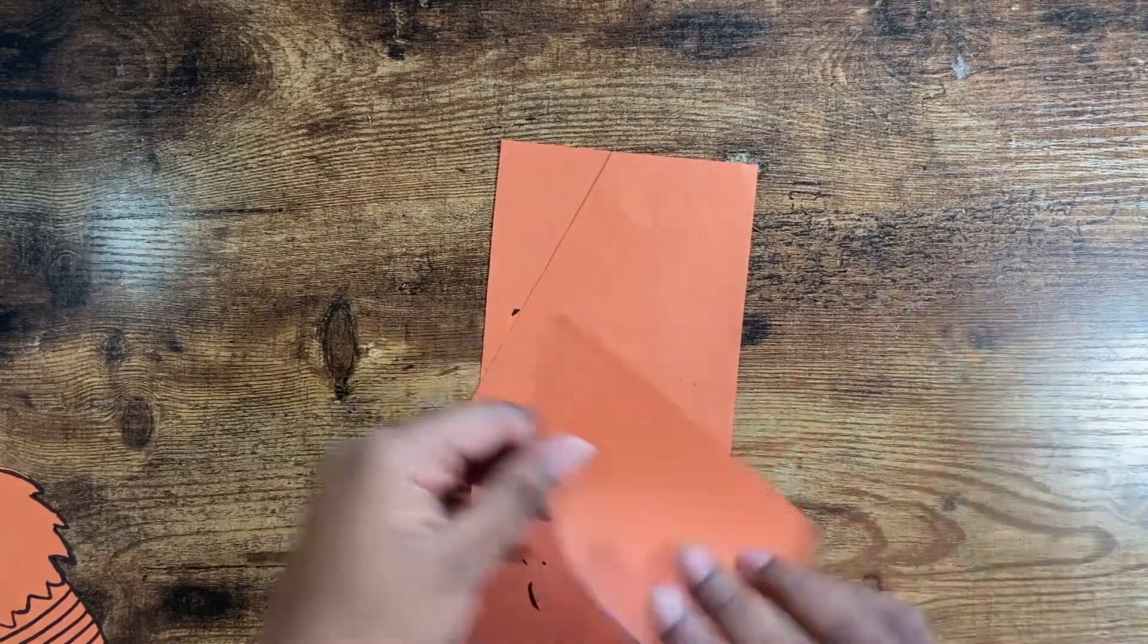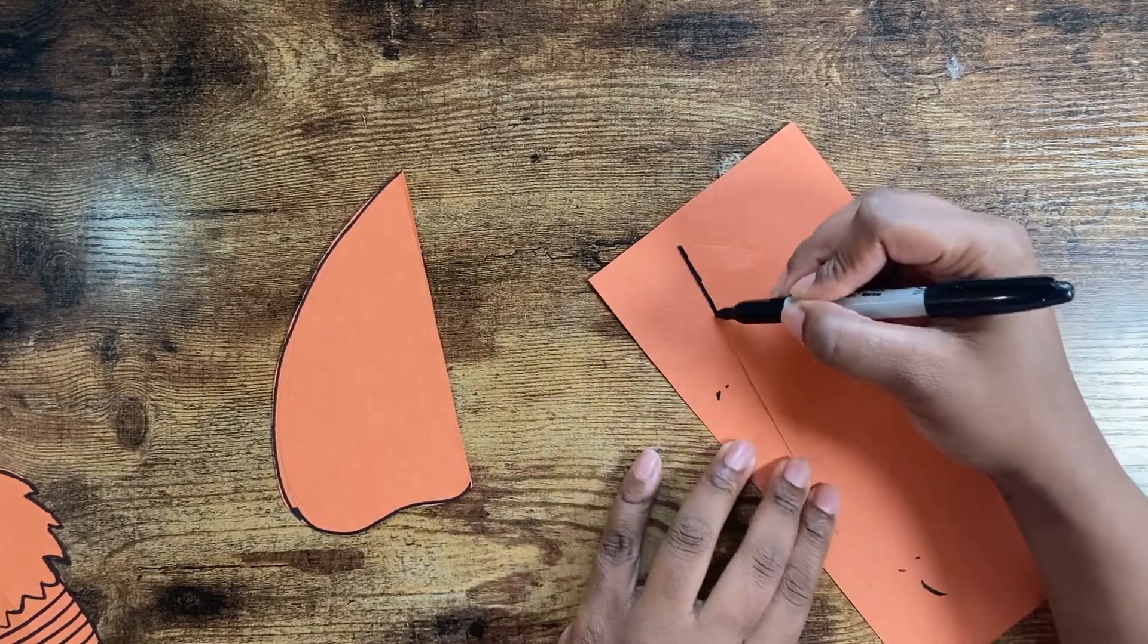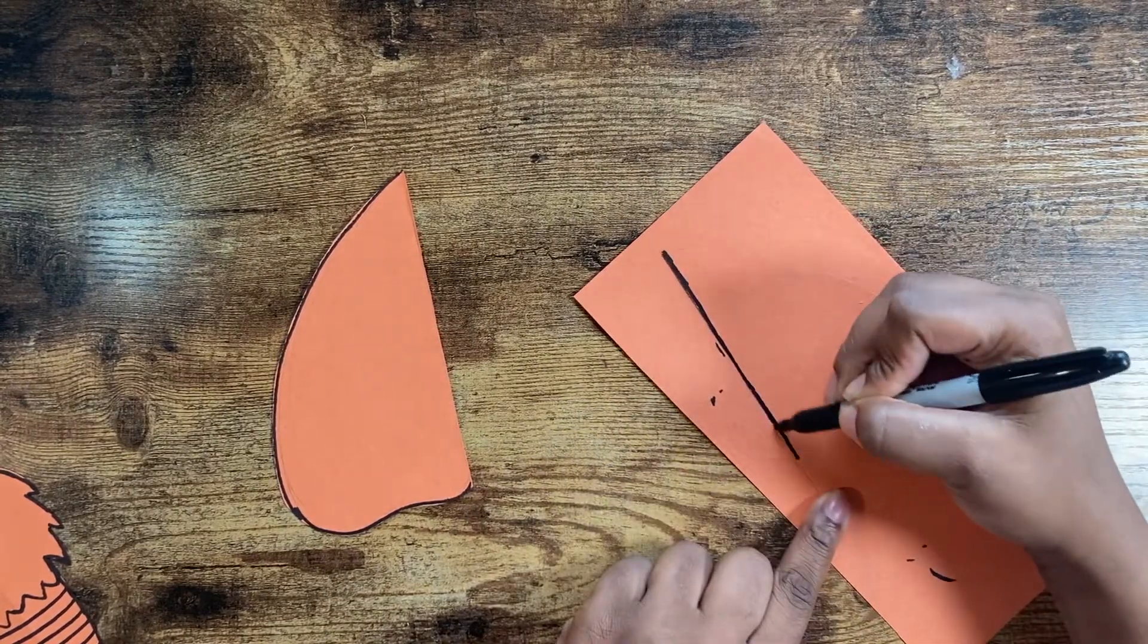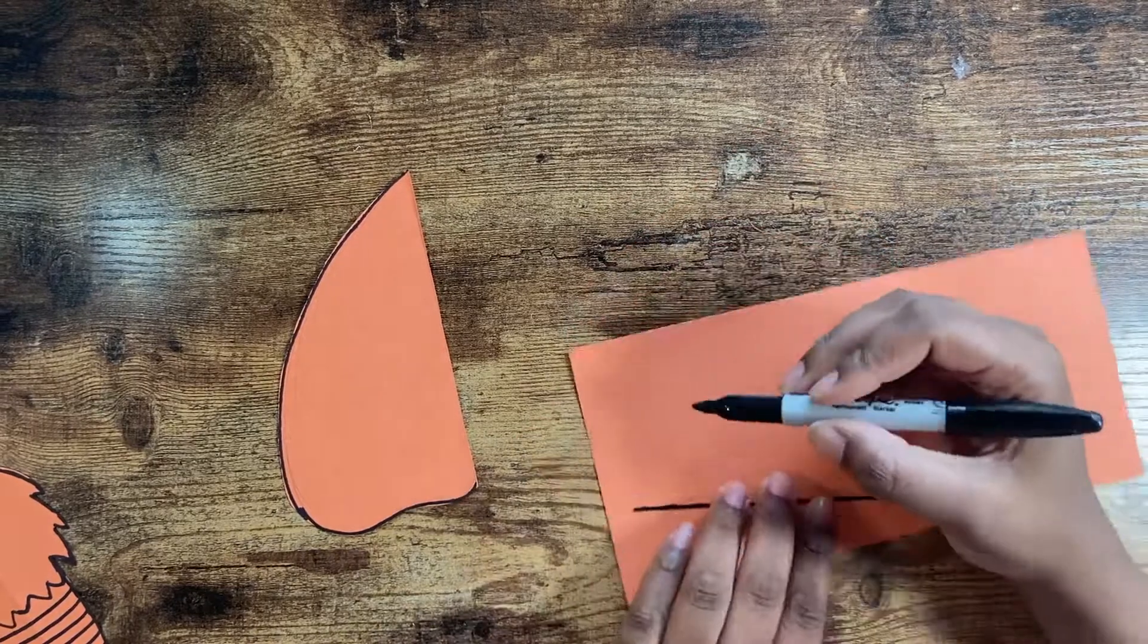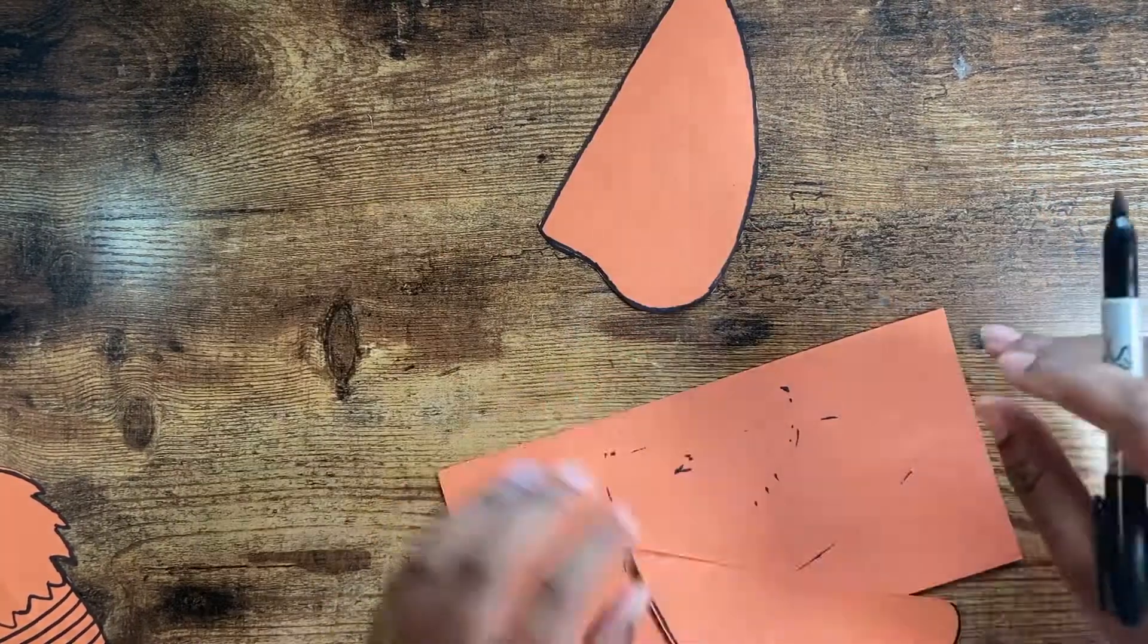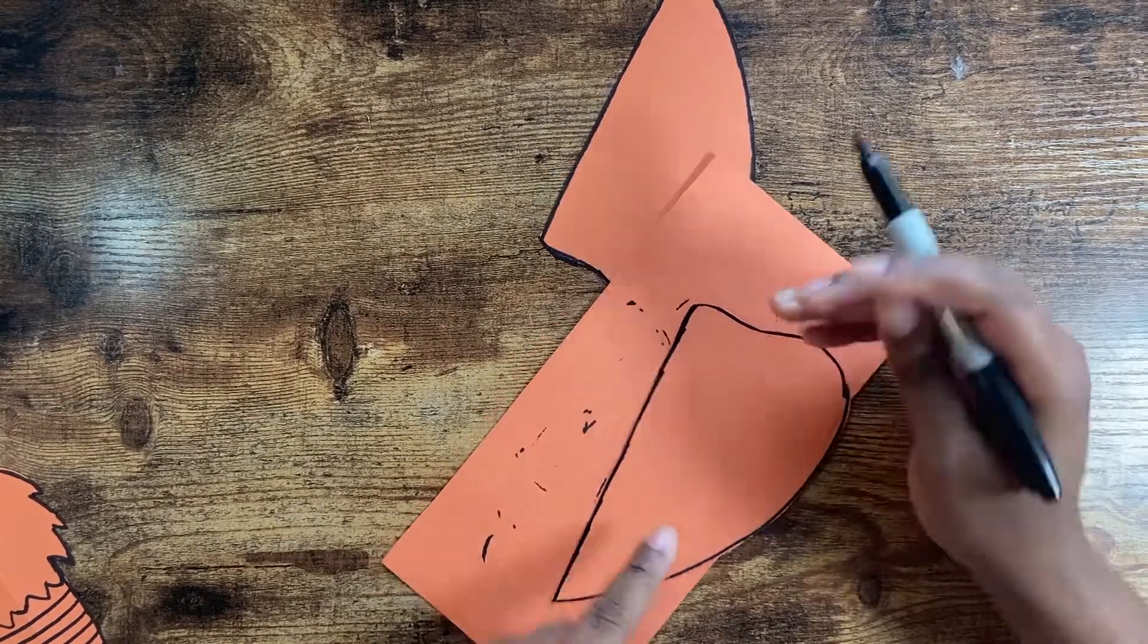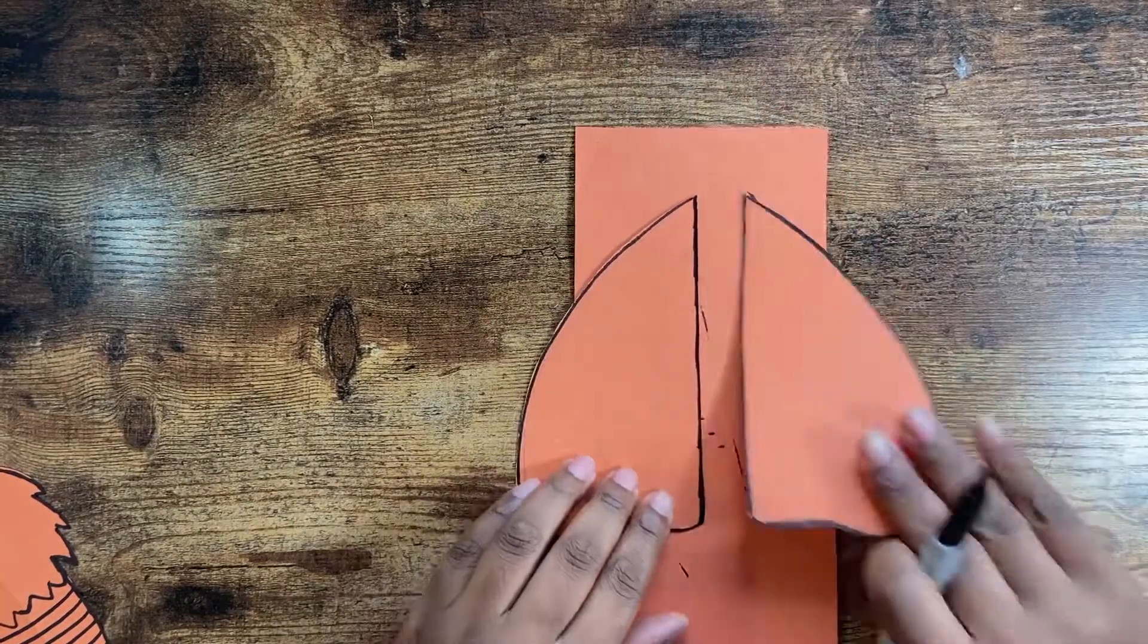And now we have two separate wings. I'm going to go ahead and go over one side so I can have an outline to do on the other wing. And I'm also going to go across this flat edge because it doesn't have an outline yet.